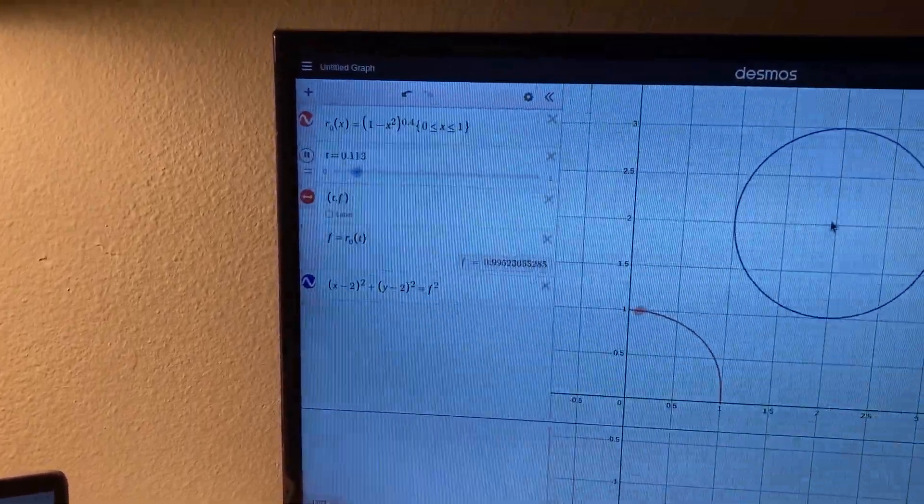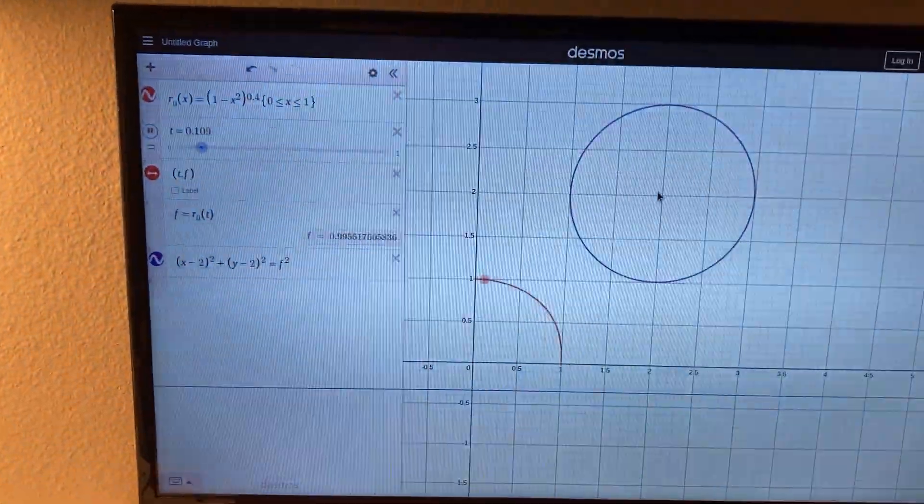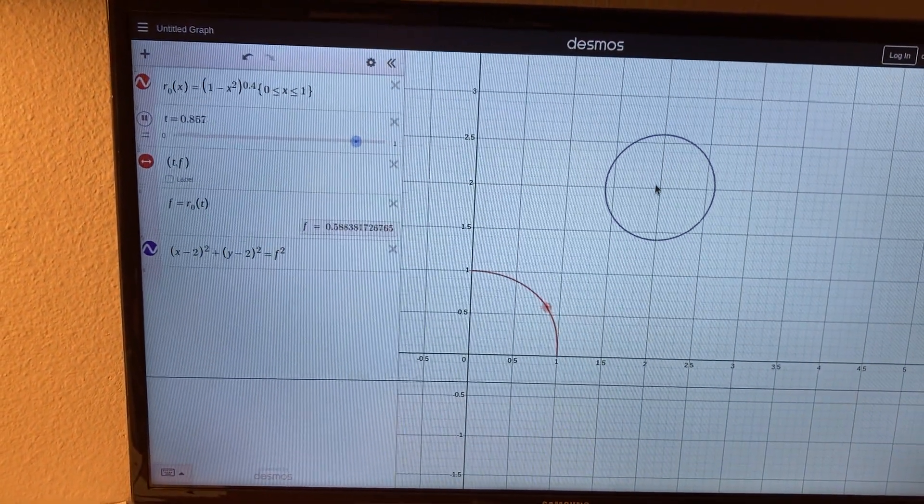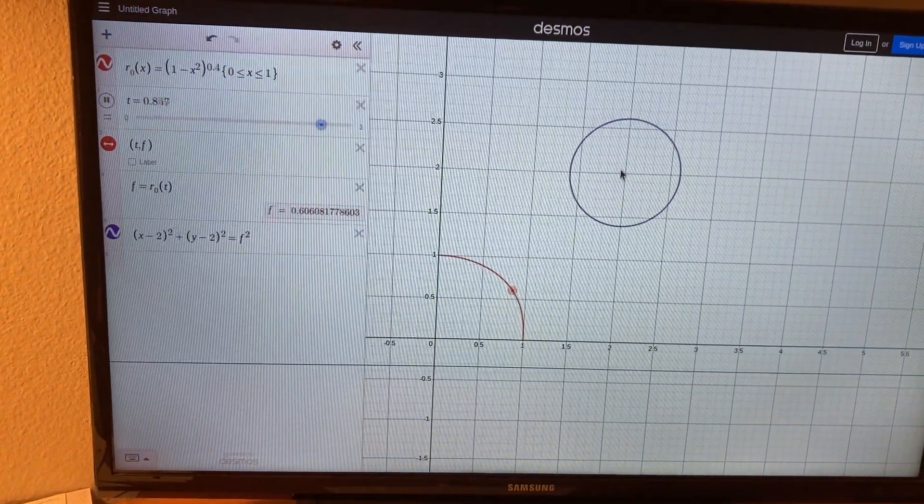In conclusion, the Rayleigh-Plesset equation models the radius of a bubble over time, and makes many assumptions. Despite the fact that no exact solutions have been found, there are many approximate solutions that are sufficiently accurate for practical purposes.